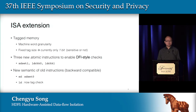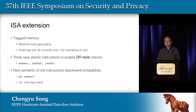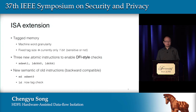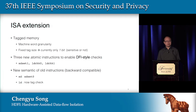HDFI includes two parts of extensions. First is the ISA extension. We extended the memory model to include one additional tag for every machine word. However, instead of supporting arbitrary-length tags, we found that in real applications a one-bit tag is enough, so in our implementation we only support one-bit tags. We also introduced three new instructions to manipulate and check the tag. Store-and-set-one stores a value to memory and automatically sets the tag to one. Load-and-check-zero checks if the tag is zero. Load-and-check-one checks if the tag is one. We don't have an explicit store-and-set-zero instruction; instead, we modified the original store instruction to implicitly set the tag to zero. For load instructions, we didn't change any semantics, so we remain backward compatible with existing binaries.